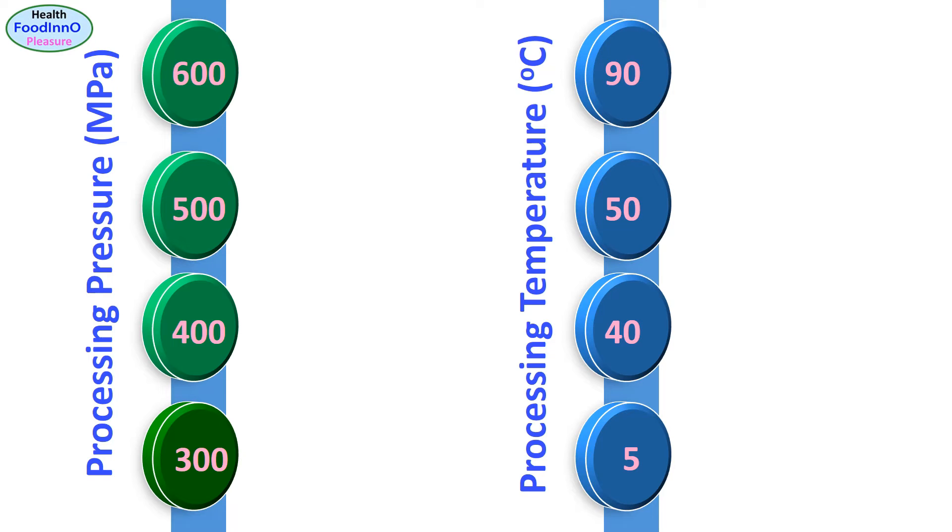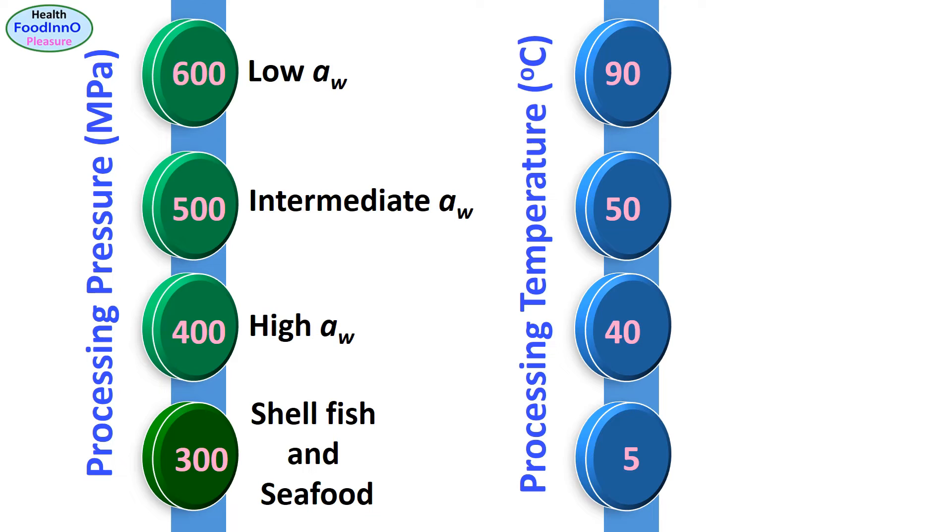In this slide we could see the use of different pressure levels for different types of processing and characteristics of the food product. For example, 300 megapascals could be used in shellfish and seafood. In the case of high water activity, we could use 400 megapascals. For intermediate water activity, we could use 500 megapascals. For low water activity, we could use 600 megapascals. Therefore, the lower the water activity of the food product, the higher processing pressure is required, since microbial resistance increases with the decrease of water activity.